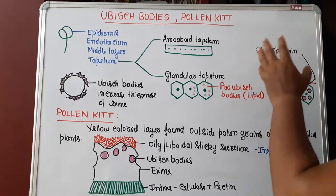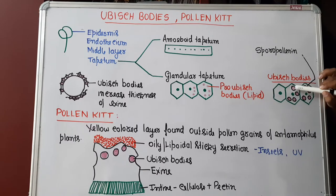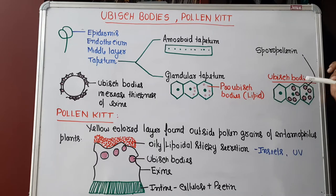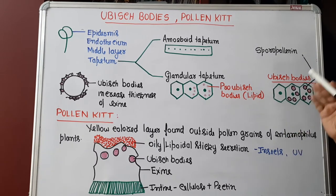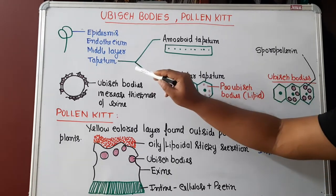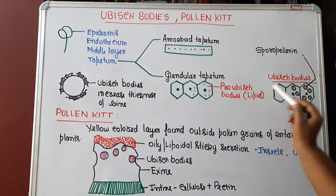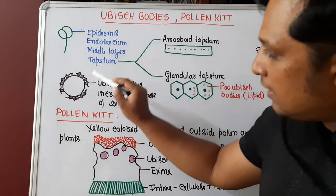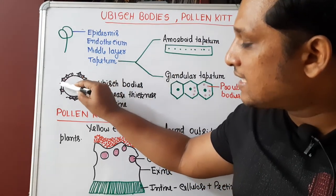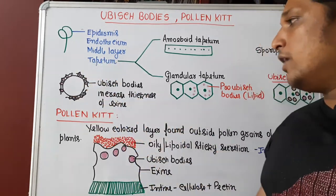These pro-Ubisch bodies will undergo further development where a sporopollenin coat is secreted around them. So, the lipid layer around which a sporopollenin layer is present is called Ubisch bodies — pro-Ubisch bodies get converted into Ubisch bodies. This Ubisch body will come out of the tapetum, where on the inner side synthesis of pollen grains is going on. Ubisch bodies will attach themselves to the exine, or involve themselves in the formation of the exine layer of the pollen grain.